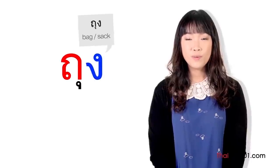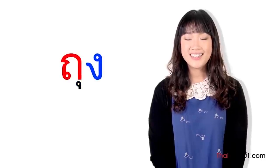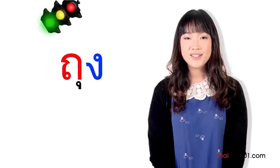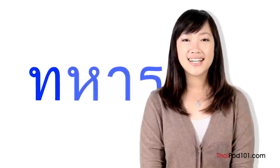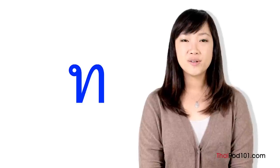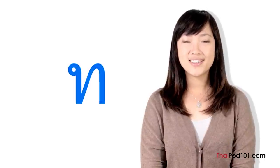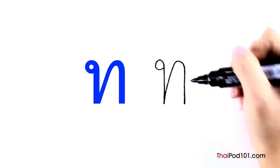Another middle-class consonant makes the sound D, just like the letter in 'diamond.' As the initial consonant of a syllable, it makes a sound between an English D and T — technically an unaspirated T. As a final consonant, it also makes a T stop. To write it: a clockwise head, down to the left, up to the top indentation, and down on the right side.